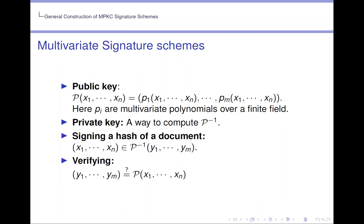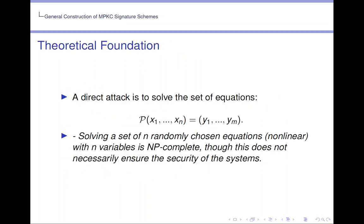And then signing a hash of a document is just finding a pre-image of a hash. The verification comes in plugging in the signature and getting the hash back. A direct attack is to solve the set of equations P equals Y. Solving a set of n randomly chosen equations with n variables is NP-complete. So this gives a theoretical foundation of why this multivariate problem would be good for a signature scheme, but this does not necessarily ensure the security of the systems.